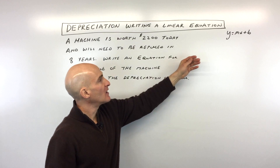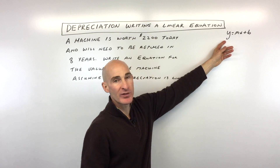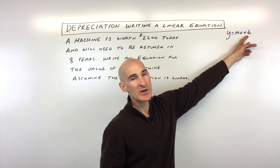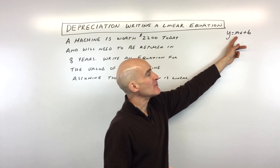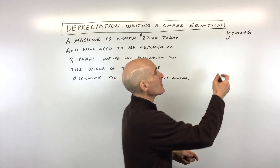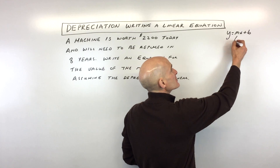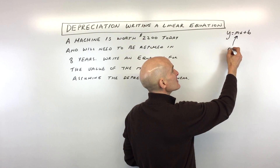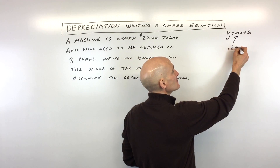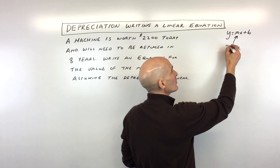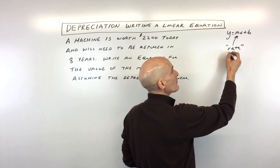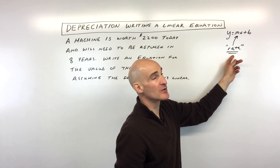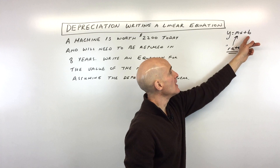When we think about a line, we think about this equation y equals mx plus b. The m is the slope, and another way to think about the slope is the rate. So when it comes to a word problem or story problem, the slope is the rate — in this case, the rate of depreciation.